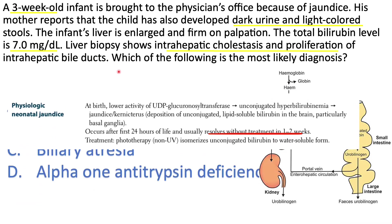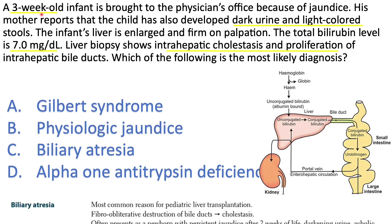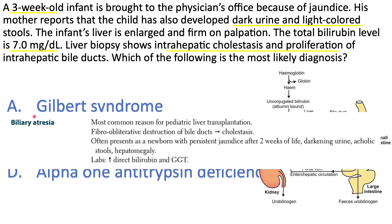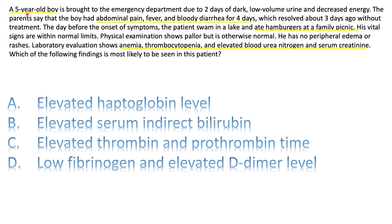Physiologic jaundice should resolve within one to two weeks, but this is a three-week-old infant. Biliary atresia is the fibro-obliterative destruction of bile ducts and can present with persistent jaundice after two weeks. Because it's obstruction, it's considered a case of post-hepatic jaundice — so there will be conjugated hyperbilirubinemia, dark urine, acholic stools, and hepatomegaly.